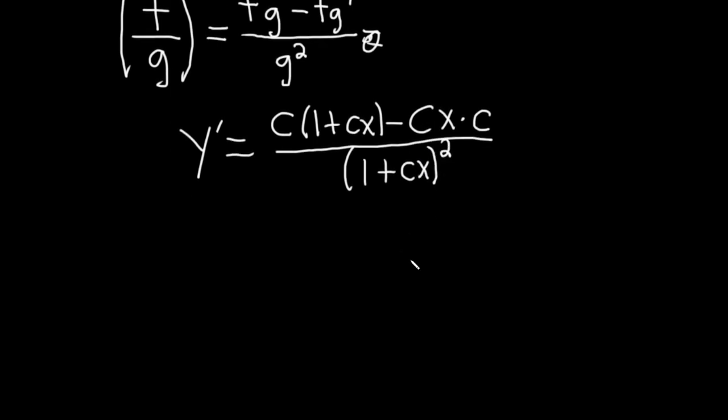Okay, let's keep going. So y prime is equal to, c times 1 is going to be c. c times cx is plus c squared x minus and then c times c is c squared x. Oh, that's really cool. They go away.